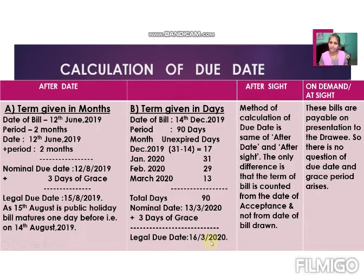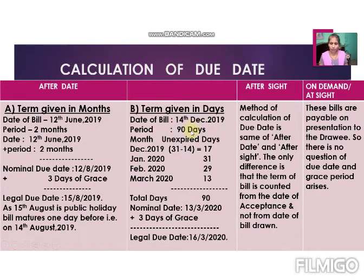Always calculate day-wise when the period is in days. If you mistakenly convert 90 days into three months — December, January, February, March — you arrive at 14th March, and adding three days of grace gives 17th March. But the actual due date is 16th March. You will get the wrong answer. So whenever calculation is in days, calculate in days only.